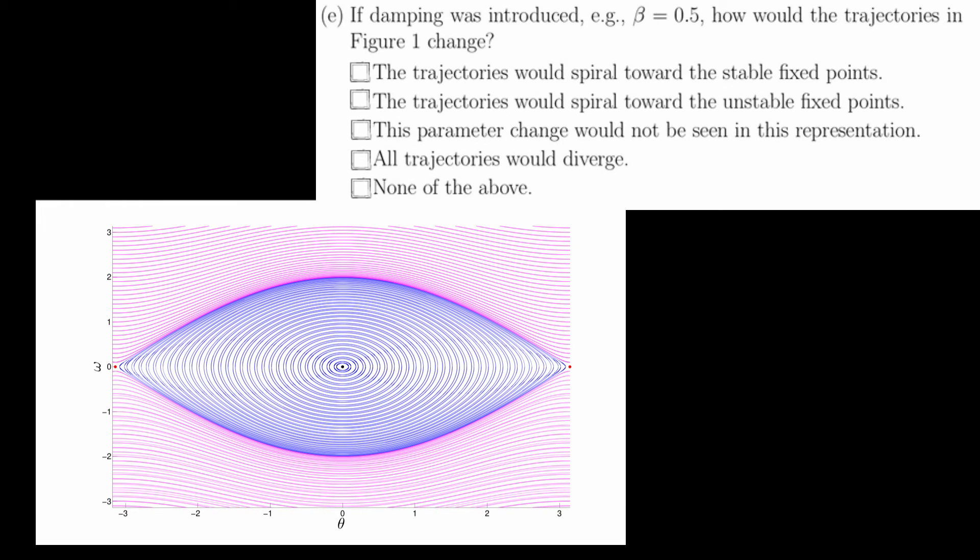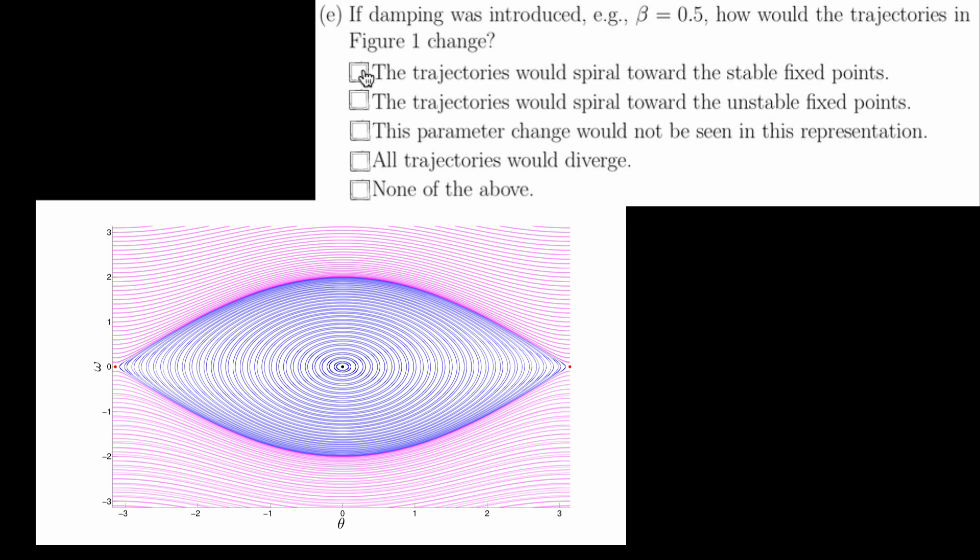Notice that if adding friction causes the trajectories to spiral towards unstable fixed points, that would mean if you let a pendulum go at pi over 2, it would attract towards the inverted position rather than a hanging position. We all know this is not the case. From the video we just presented, we know that the answer is the trajectories that spiral towards the stable fixed point, which lines up with our intuition about real pendulums.